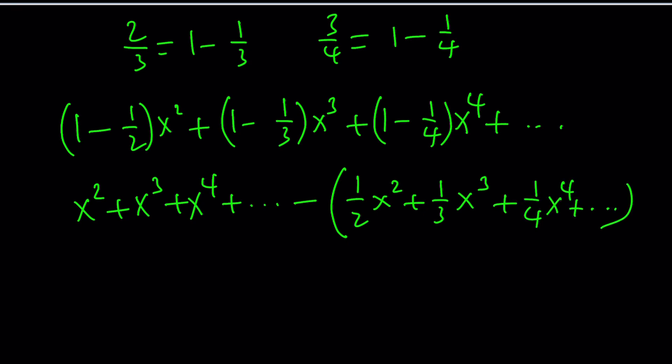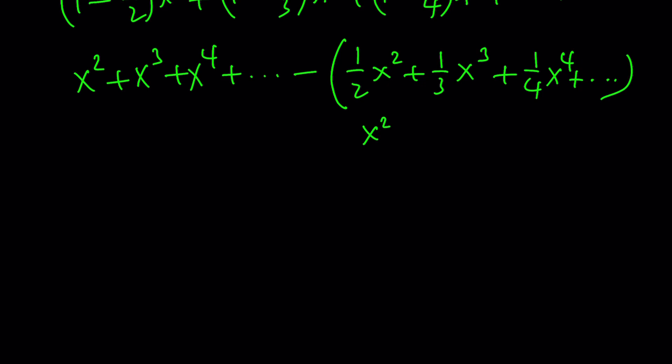Okay, the first series is very familiar because we can do it. It's geometric, right? What about the second one? Hmm. We do get something like 1 half of x squared, or I can think of it this way. x squared over 2, x cubed over 3, x to the fourth over 4, so on and so on. Does that ring a bell?